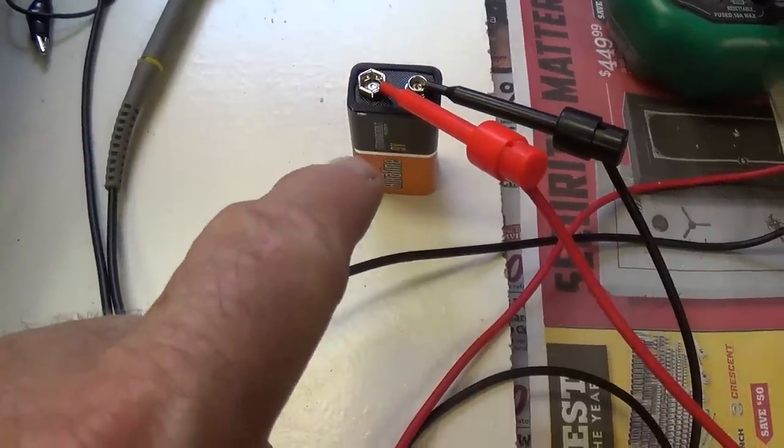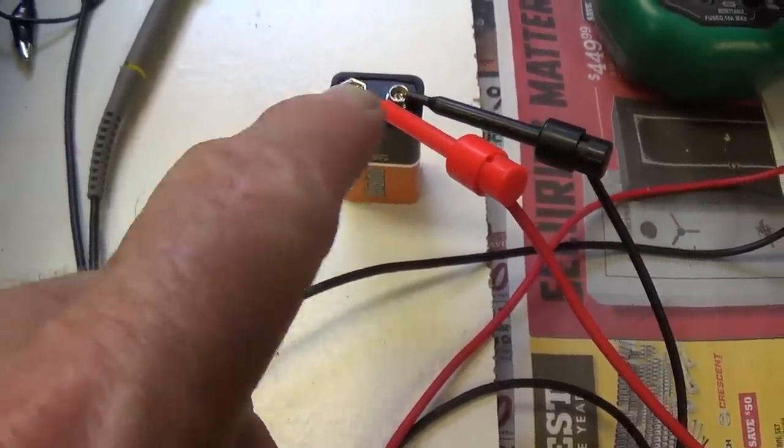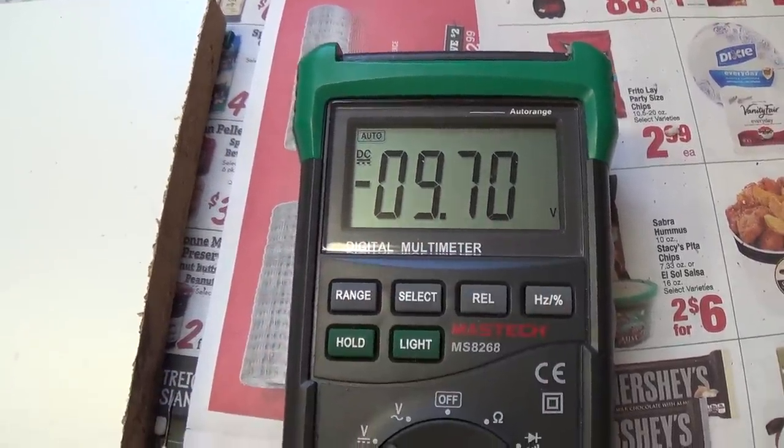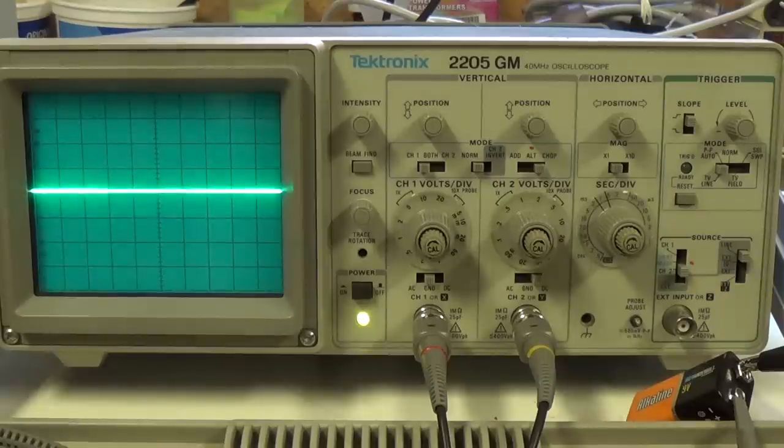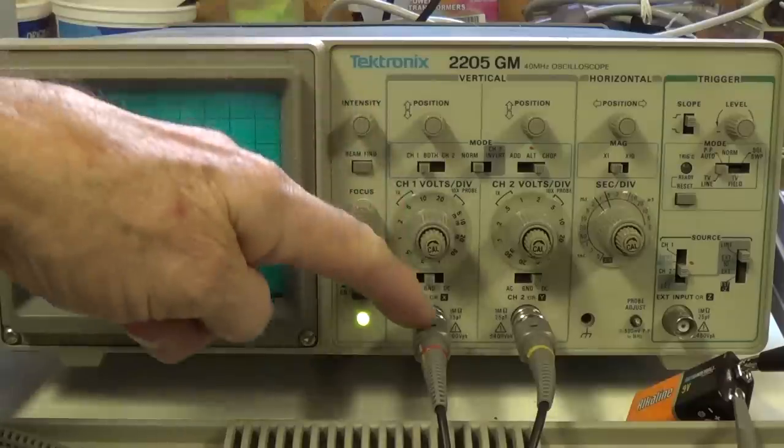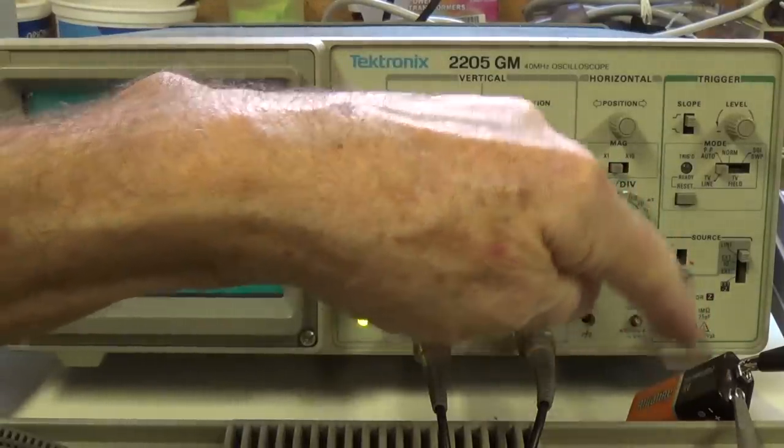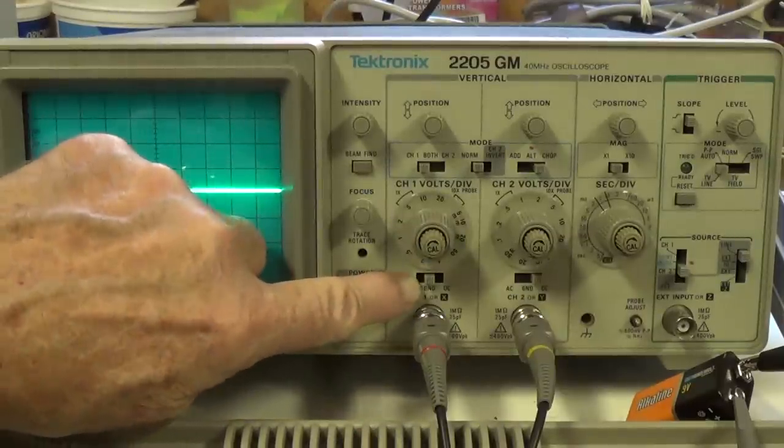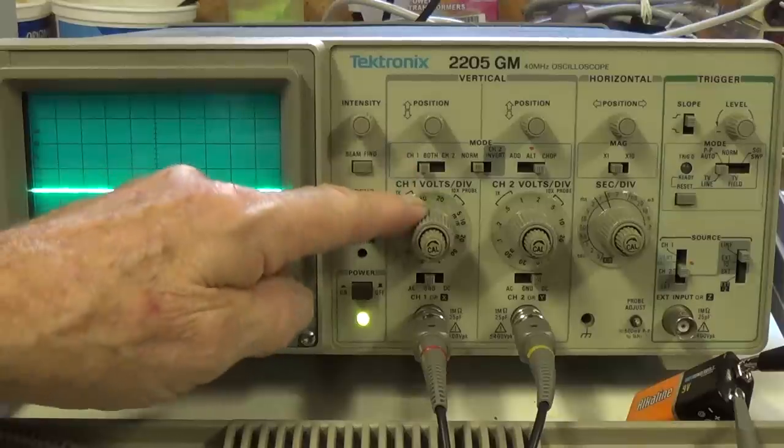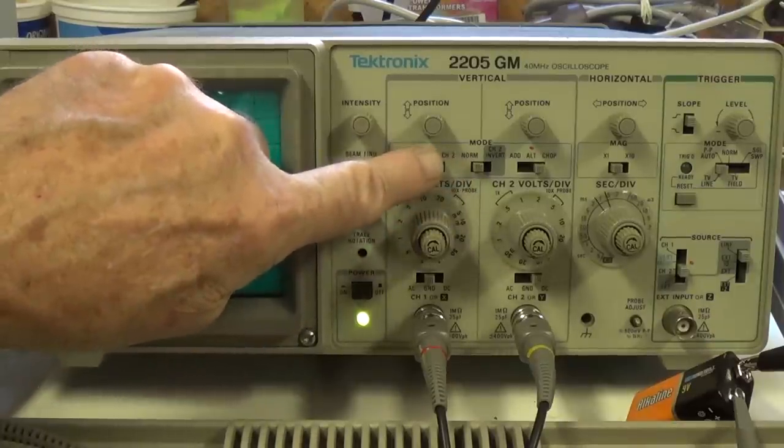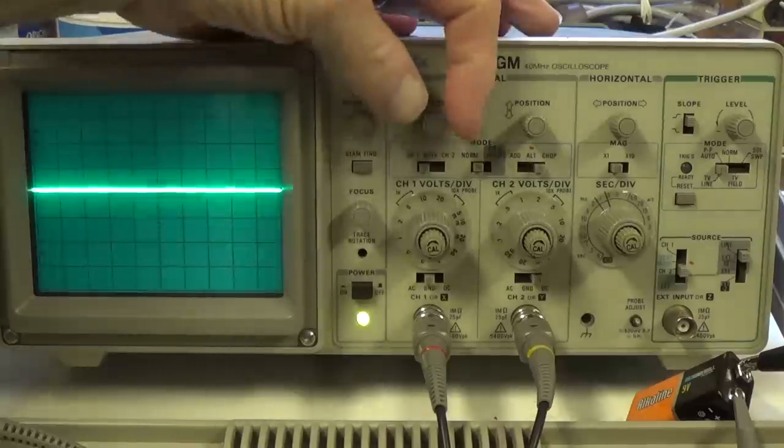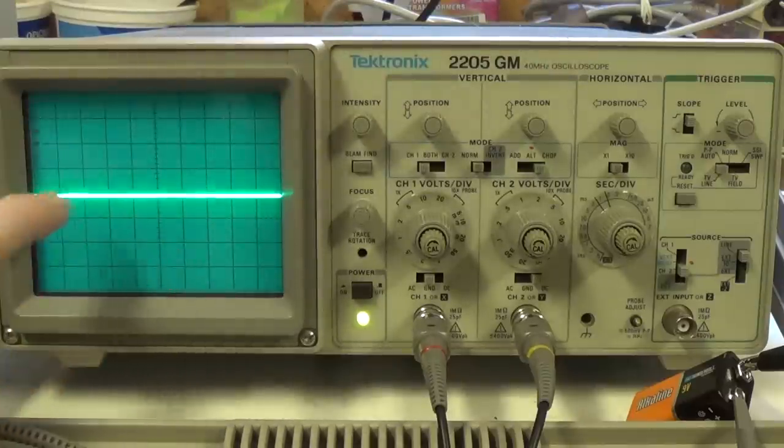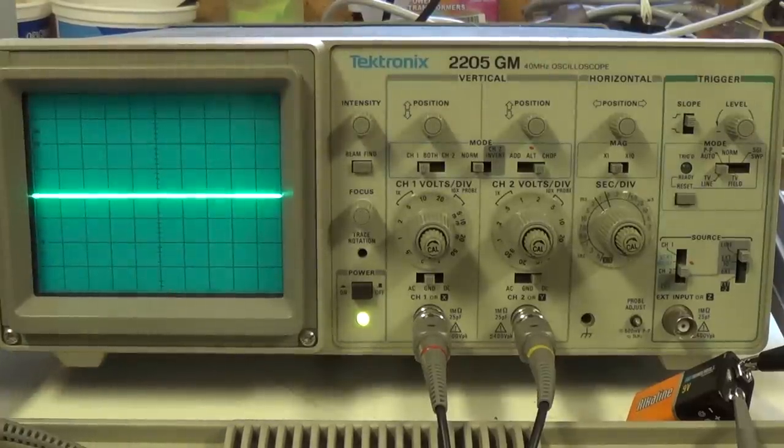What better test subject than a 9 volt DC battery connected here to the DC voltmeter and showing an output of exactly 9.7 volts DC. Now that we know the voltage from the battery, I have attached the probe from channel 1 to the positive terminal and the ground clip to the negative terminal. I've set the oscilloscope at ground, 5 volts per division, channel 1 and turned it on. Then when I get the horizontal scan, I've adjusted it with the position knob so that it exactly coincides with the horizontal X axis.